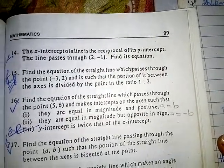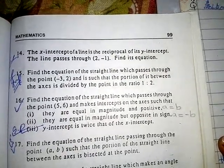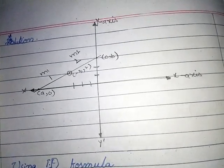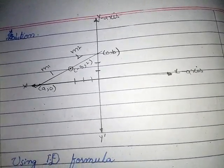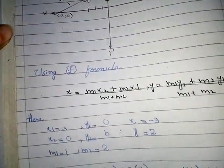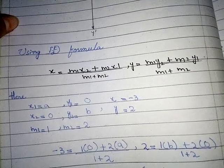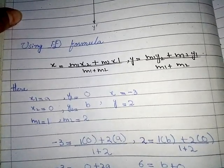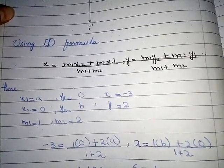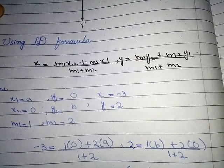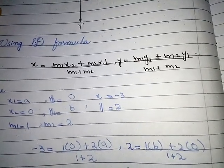We have to find the equation of the straight line which passes through the given point. Look at this diagram — we draw this diagram according to the question. We use the section formula (ID formula). The ID formula is: x = (M1·x2 + M2·x1) / (M1 + M2).